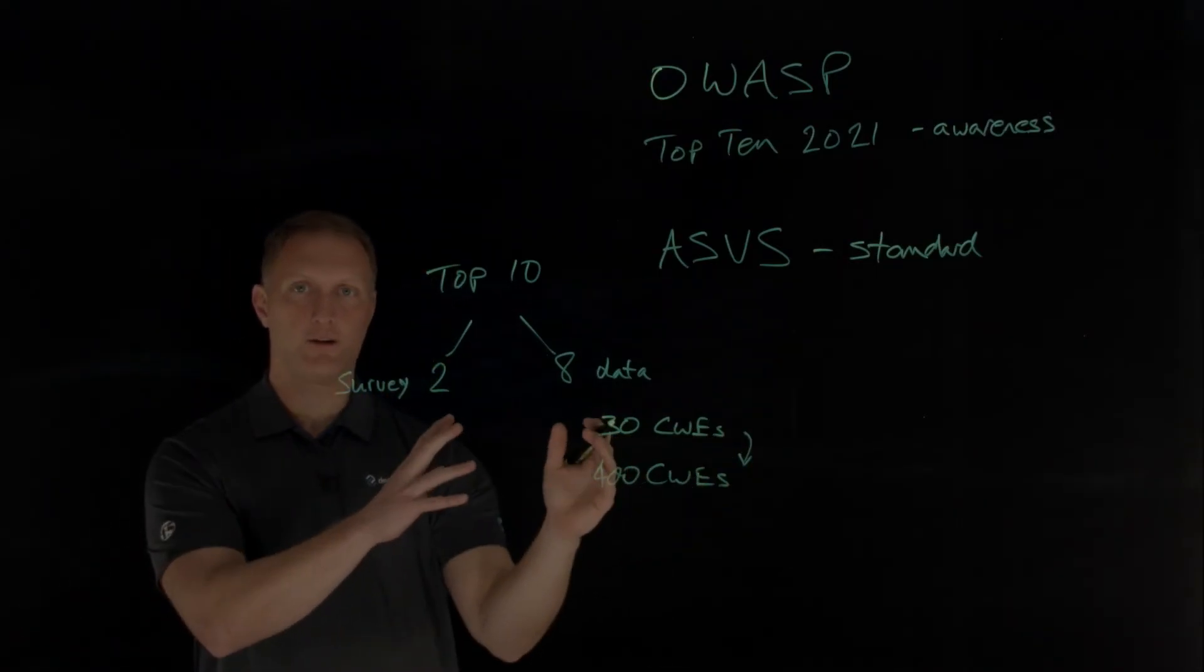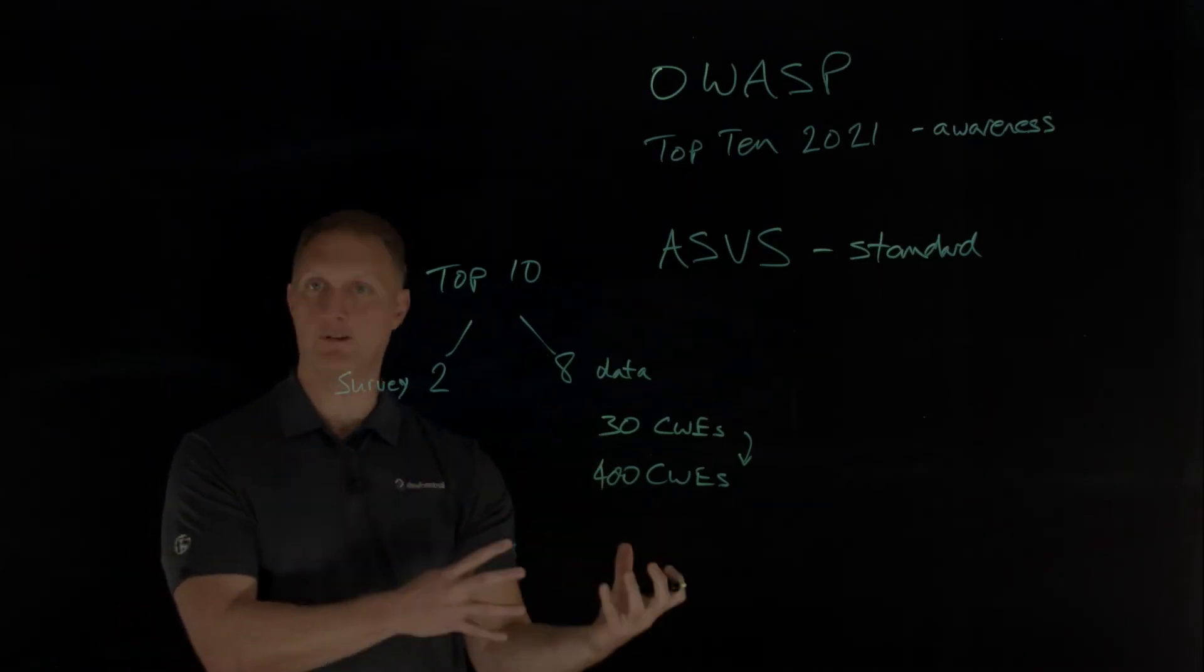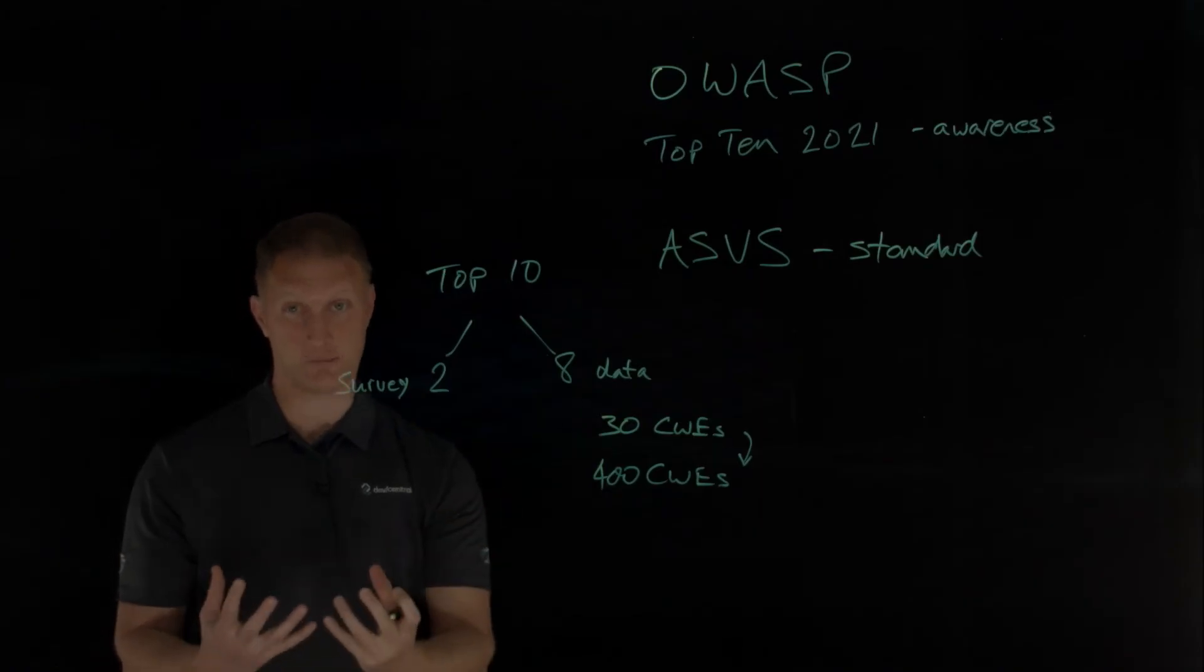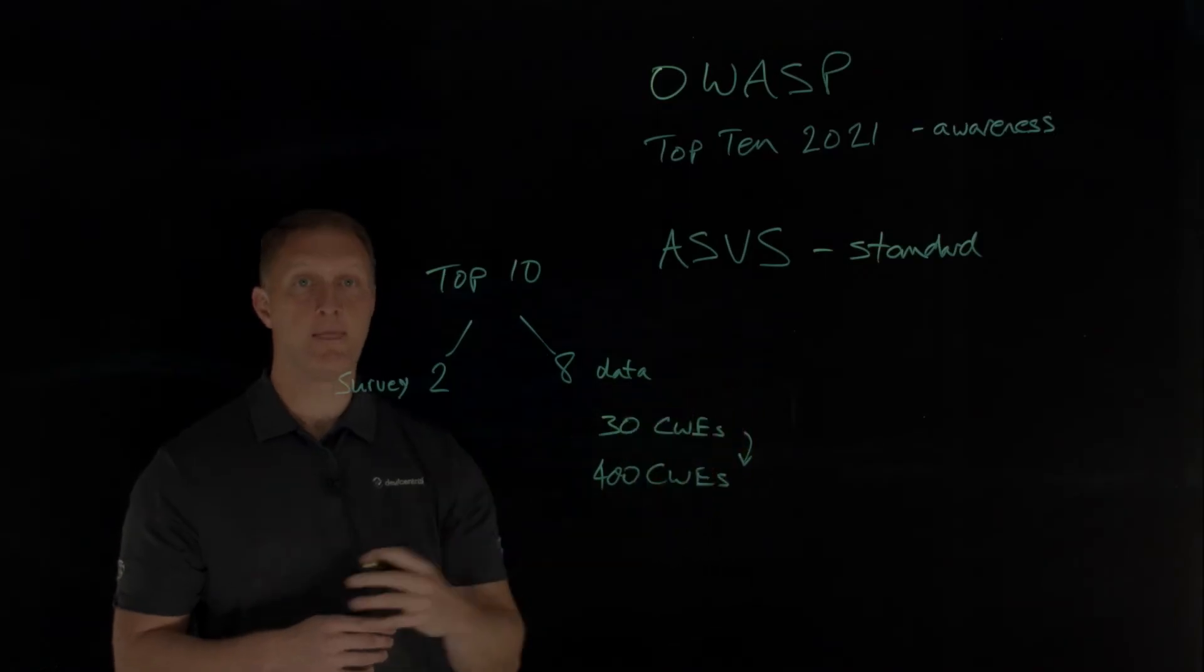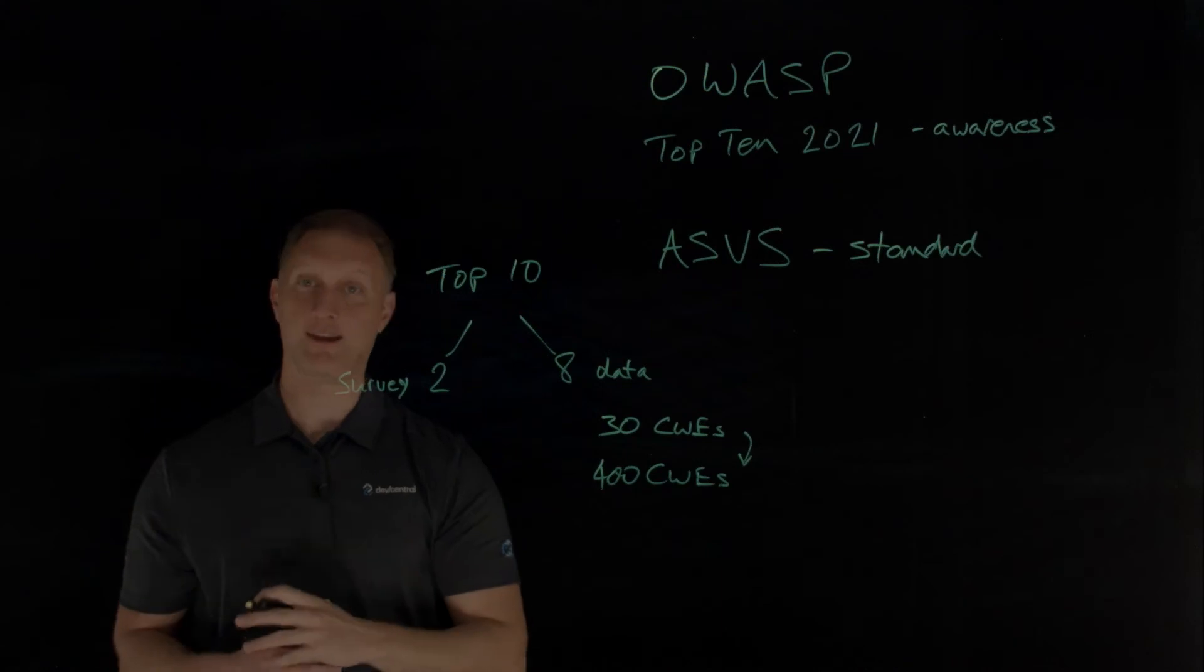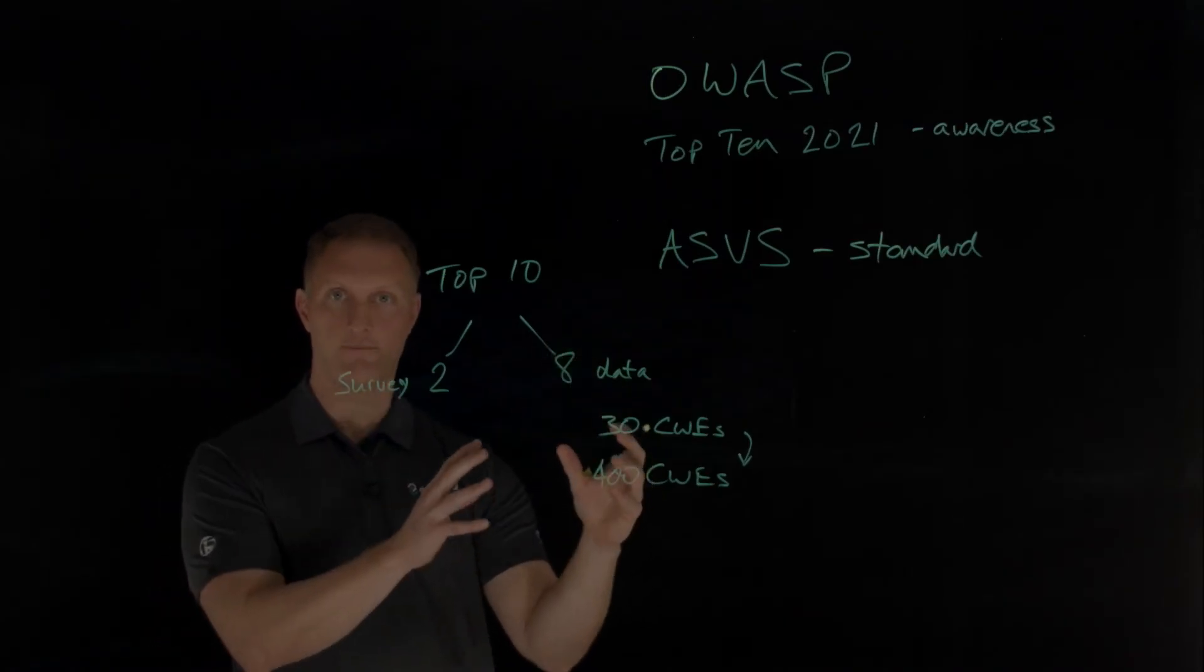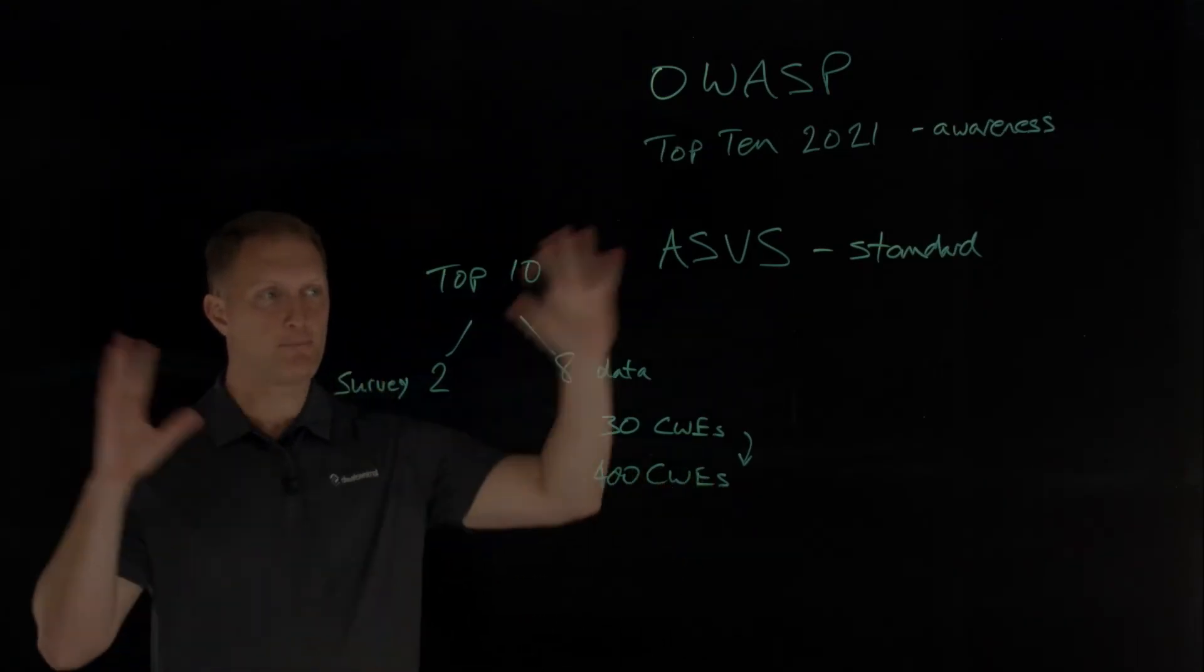In the CWEs, there are what I'll call root cause types of CWEs, and then symptom type CWEs. A root cause example would be like a cryptographic failure or misconfiguration, security misconfiguration. Whereas a symptom would be like sensitive data is being exposed or denial of service problems. The OWASP tried to focus more on the root cause type of CWE whenever they possibly could.